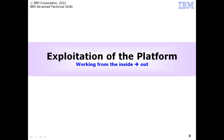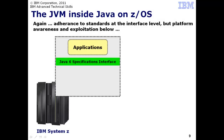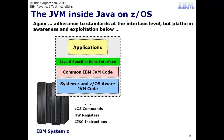Now let's turn to the way WAS-ZOS directly exploits the platform. We'll work from the inside out. WAS-ZOS has at its heart Java, just like WAS on every other platform. The interfaces of the embedded Java are common and consistent across all platforms — to the applications, Java is Java. The Java specifications are implemented with IBM JVM code, some of which is common to all WAS platforms and a portion that is very much ZOS unique and ZOS aware.